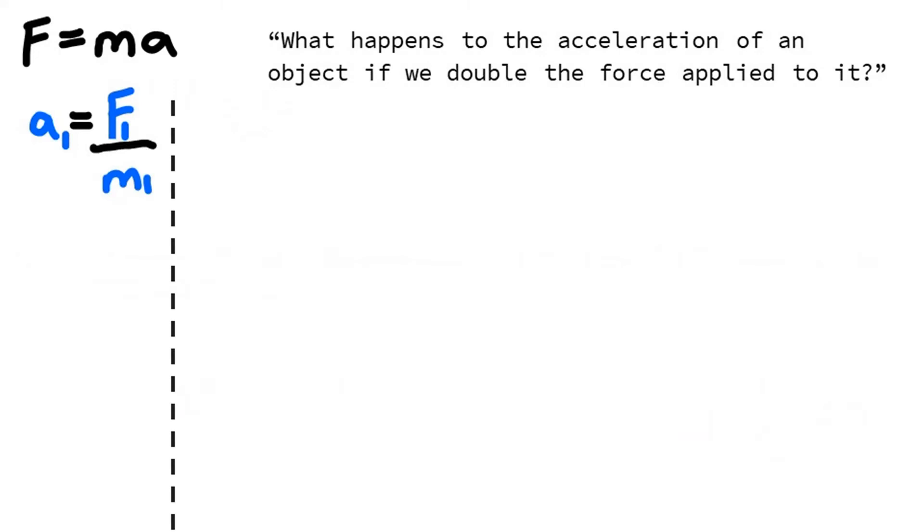First of all, let's rearrange F equals ma to make acceleration the subject. And for reasons that will become clear later, I'm going to put a little subscript 1 for each variable. Here's the question again. In the context of the question, we've got an acceleration of an object, and then something happens, something changes, so that our acceleration is now different. What we do is write down the equation for acceleration again, but put a subscript 2 next to each variable.